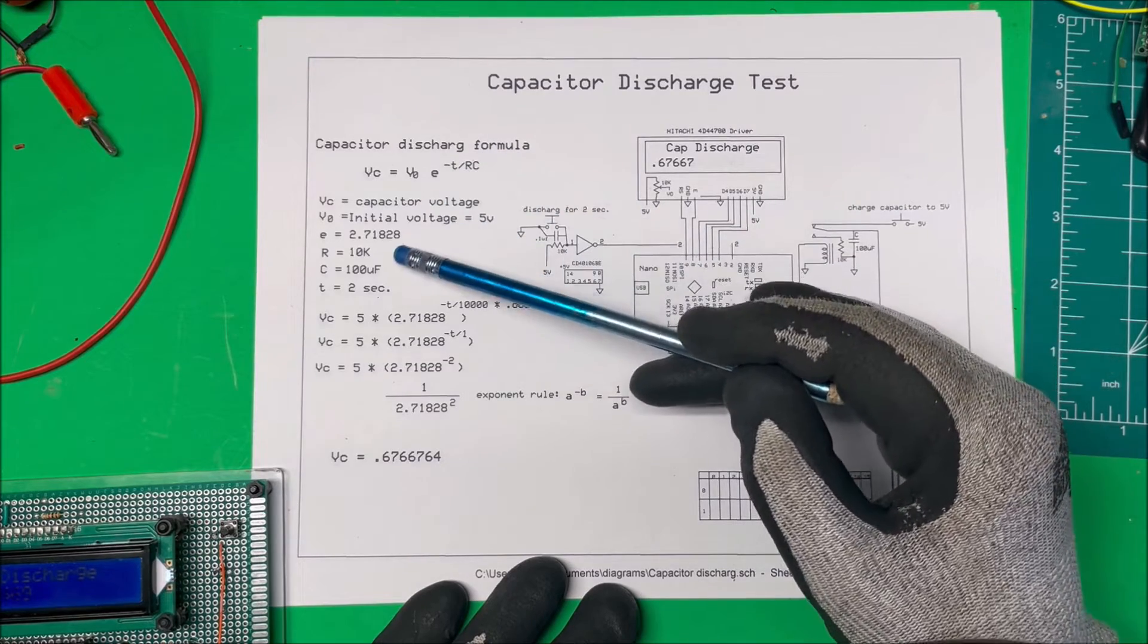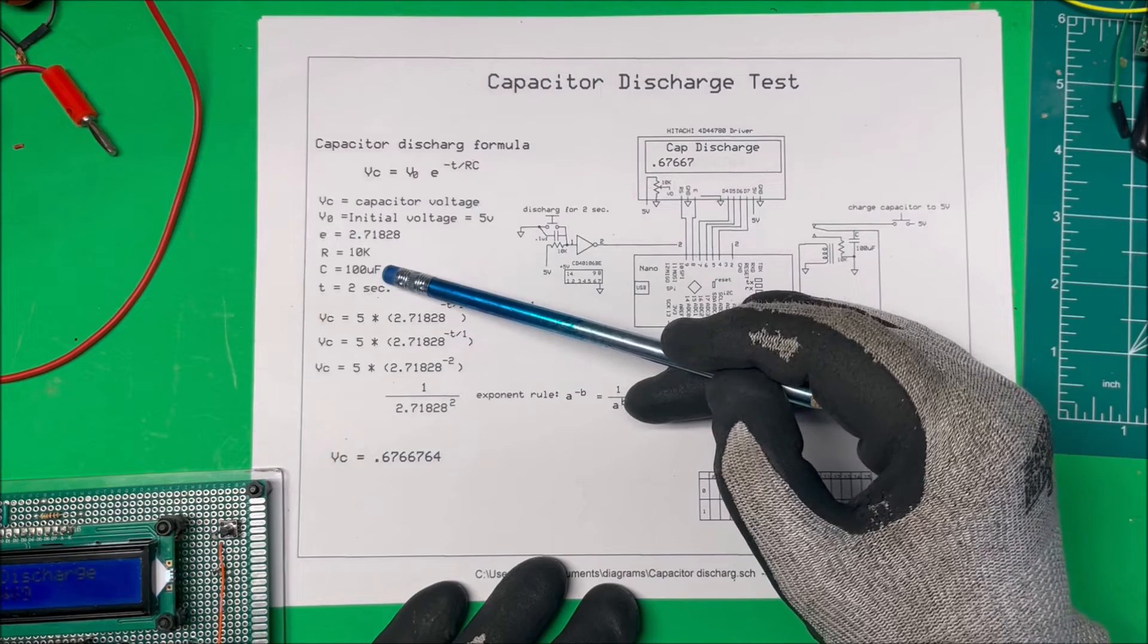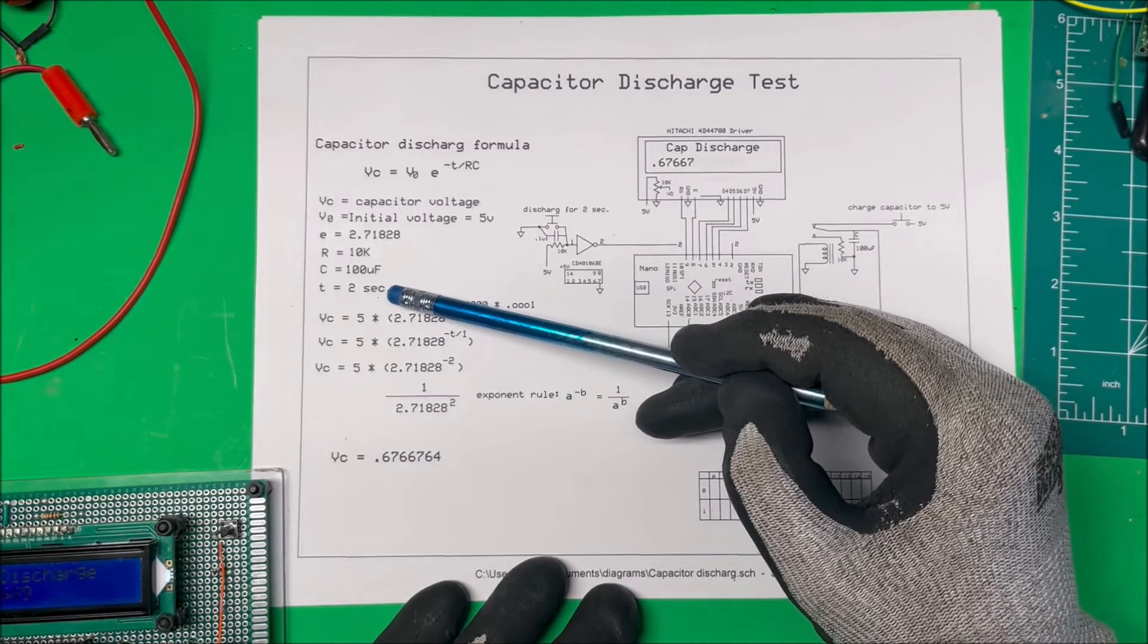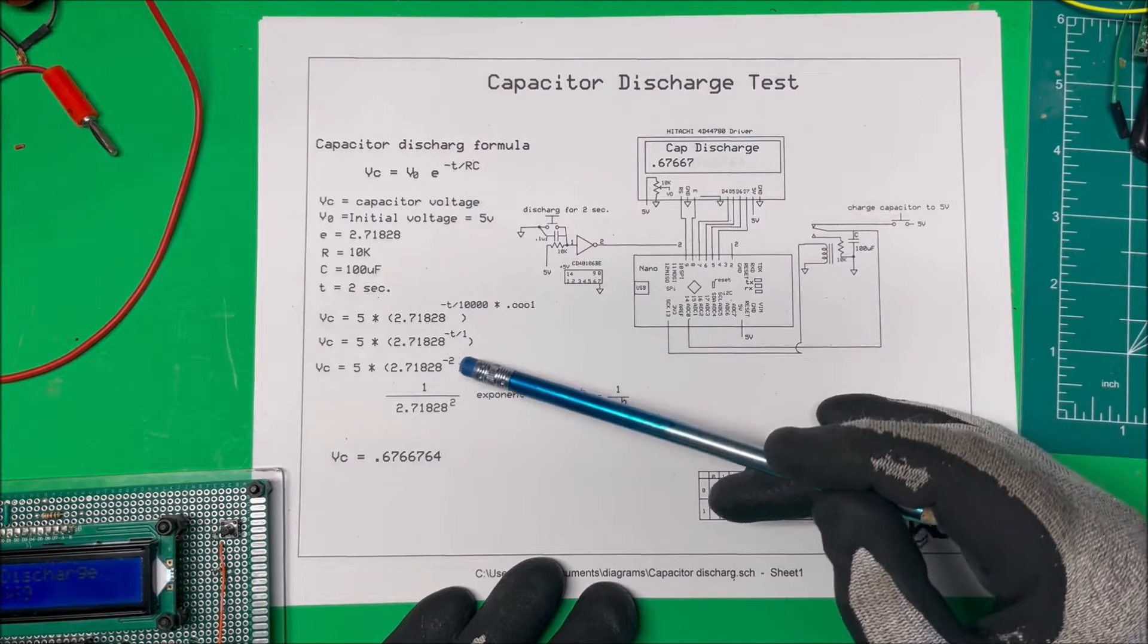So now in this case I'm using a 10k ohm resistor and a 100 microfarad capacitor and I'm going to discharge that capacitor for two seconds and we're going to see how much voltage is left in there.